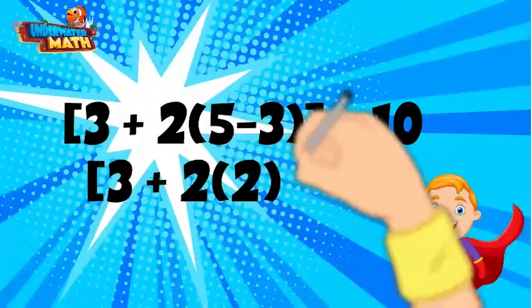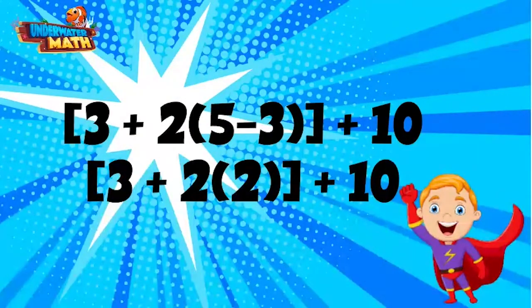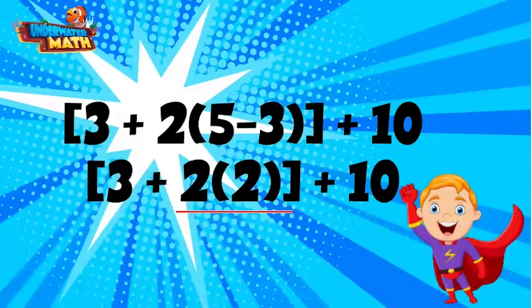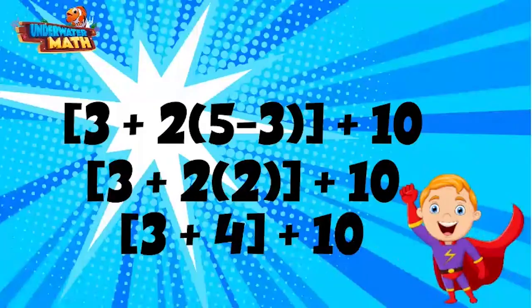We can rewrite the next line like this. In the order of operations, our next step is multiplication and division. A number directly next to parentheses means multiplication. 2 times 2 is 4, so we can rewrite our next line like this.